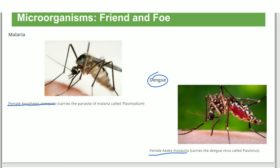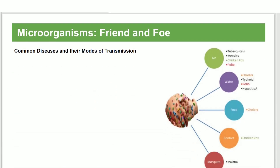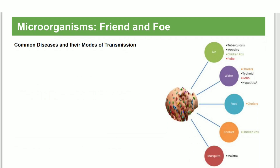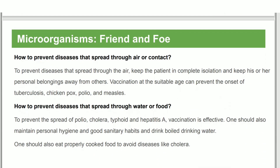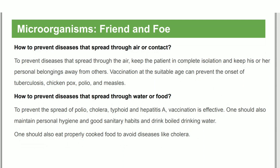Malaria is spread by the female Anopheles mosquito, while dengue is spread by the female Aedes mosquito. Common diseases spread through air include tuberculosis, measles, smallpox, and polio. Water-borne diseases include typhoid and polio. Hepatitis and cholera are also spread through food and water.